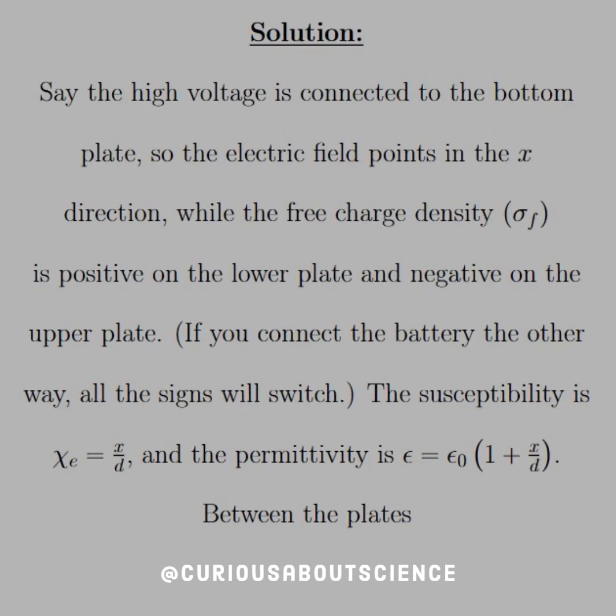So for our solution, let's consider the high voltage is connected to the bottom plate, so the electric field points in the x direction. While the free charge density sigma f is positive on the lower plate and negative on the upper plate. If you connect the battery the other way, all the signs will switch.